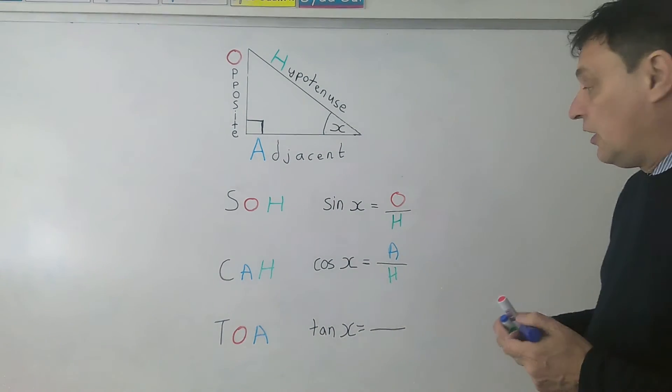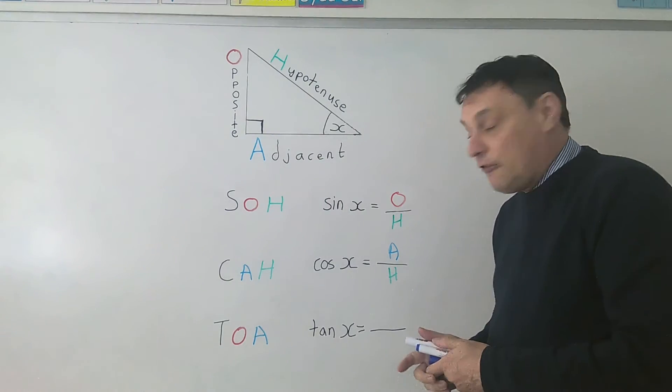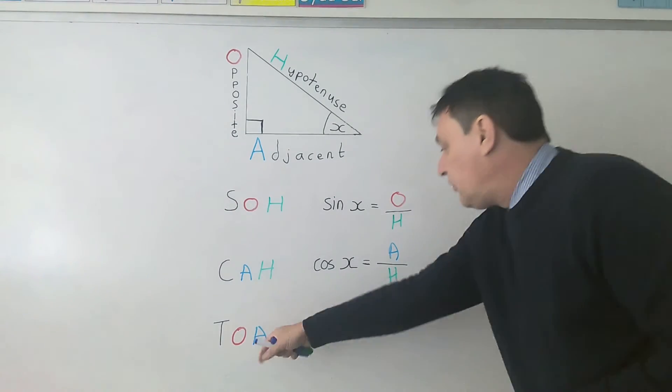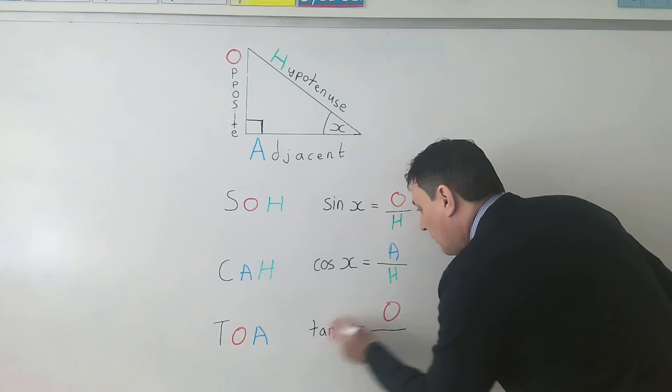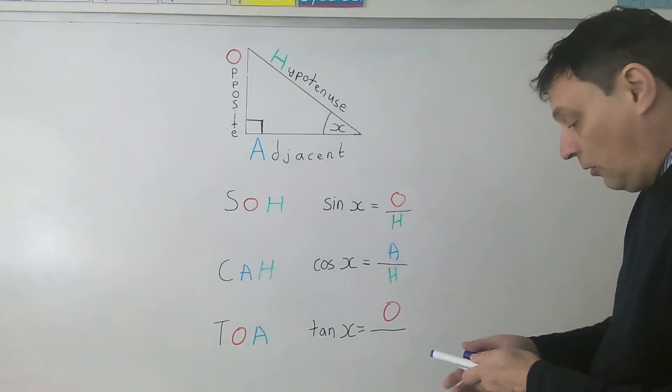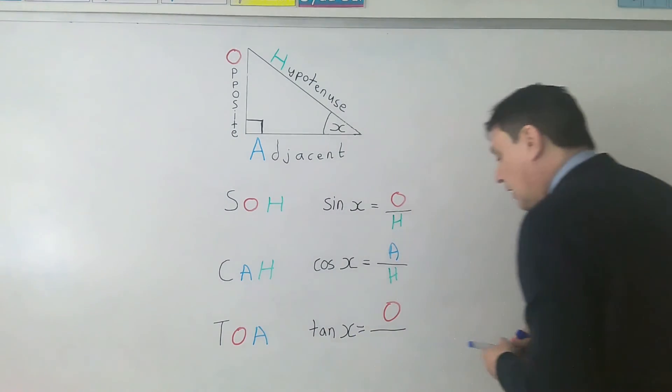And then finally TOA for tan, you're going to have the opposite, so remember this middle letter is always going to be the numerator in the expression of top number, over the adjacent.